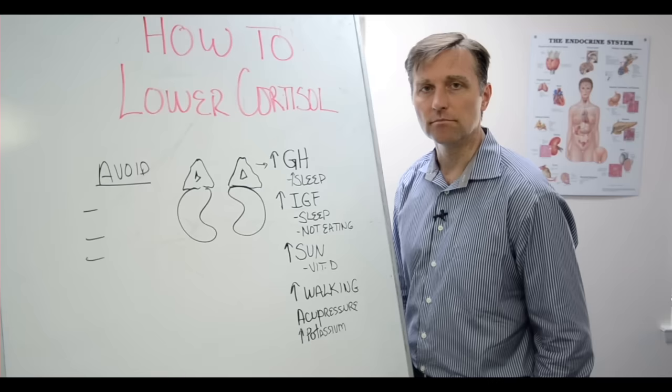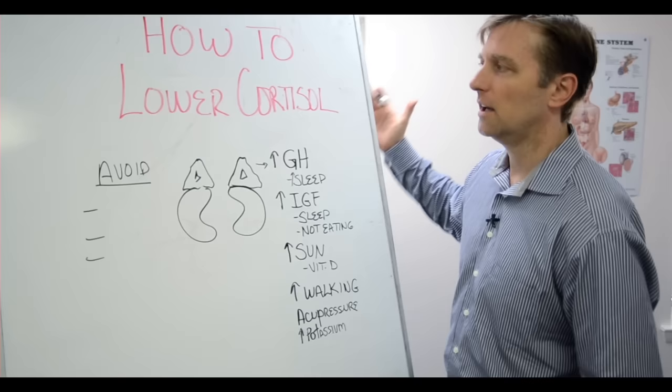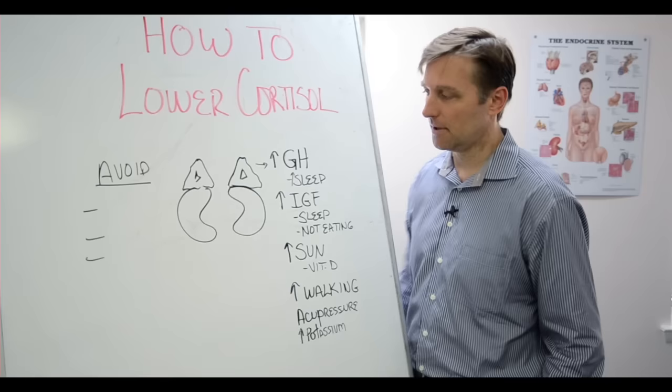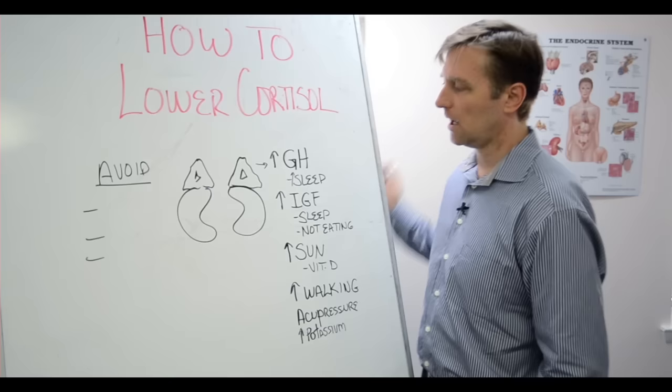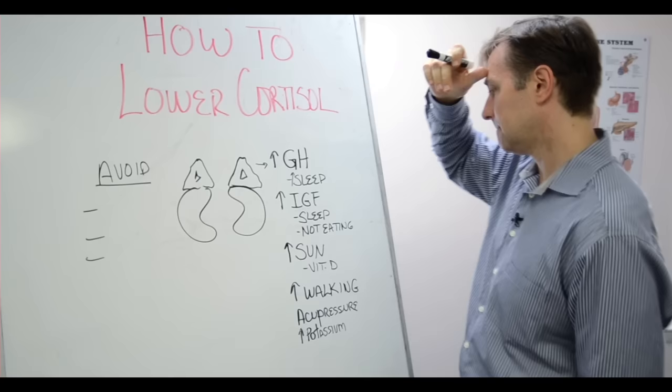Number three, sun. Getting sun on a regular basis is very powerful to lower cortisol. You go to the beach, you get sun, and you feel calmer, and then you take a nap. Sleep and sun lower cortisol. So really what you need to do is go to the beach for about six months and get sun and sleep. I'm just kidding, if you can do that.